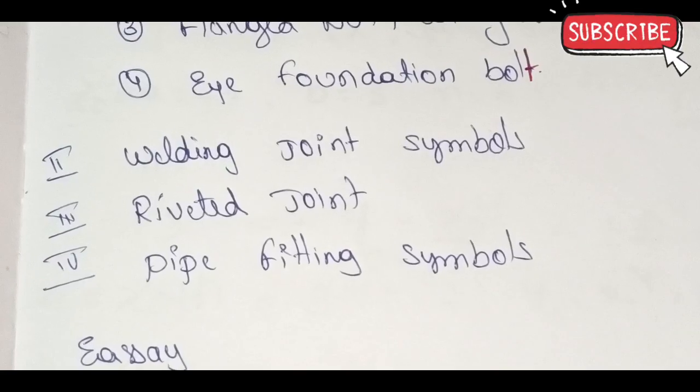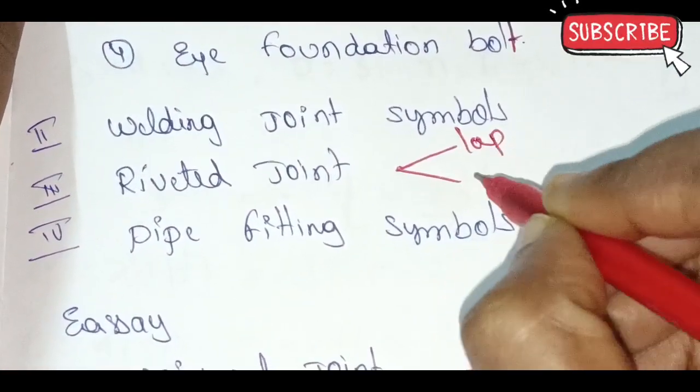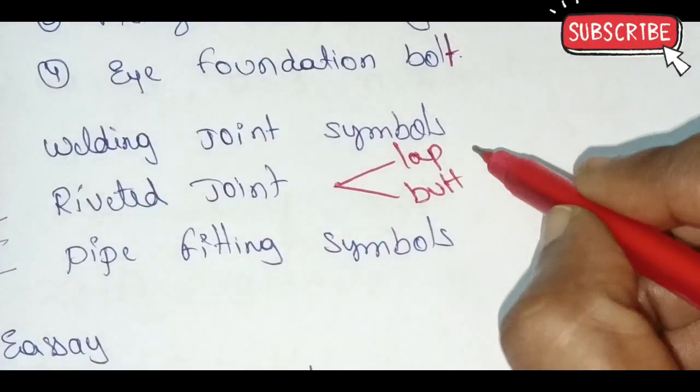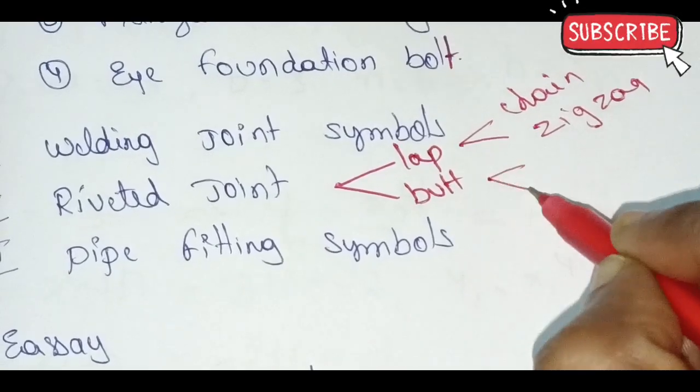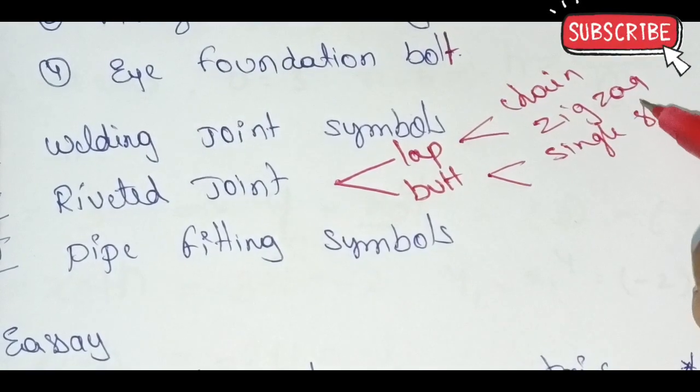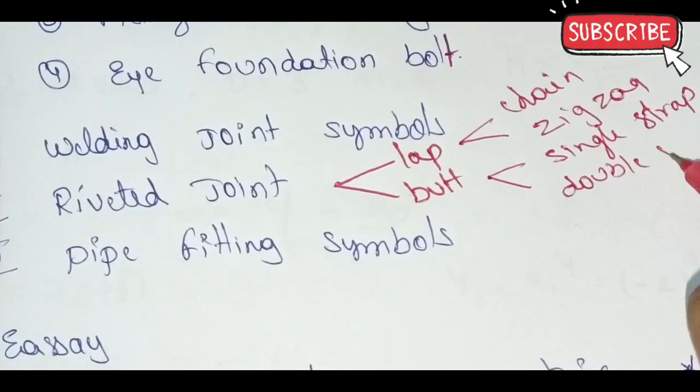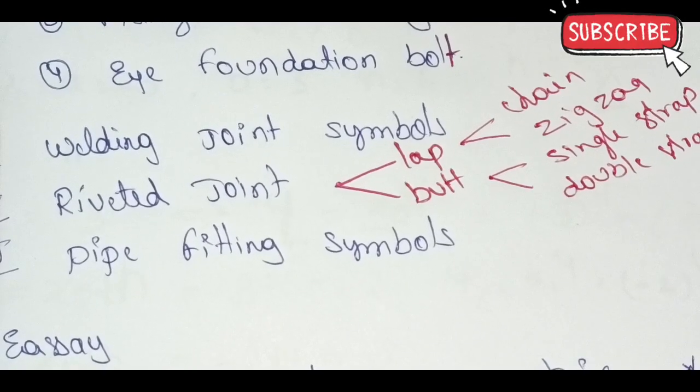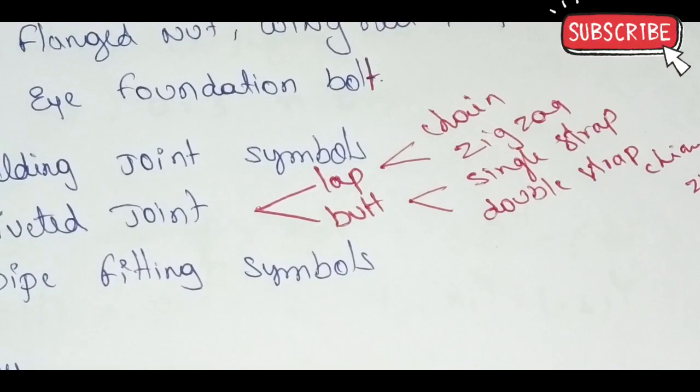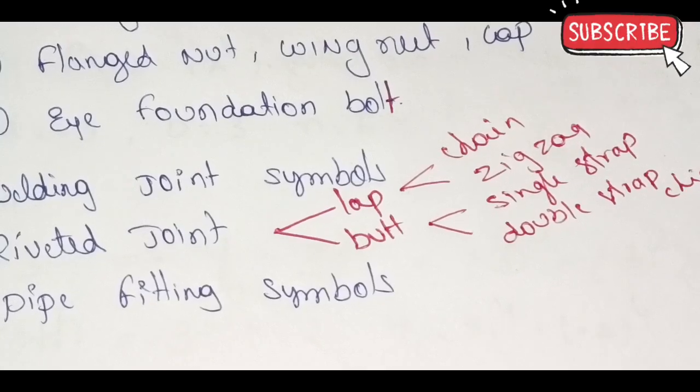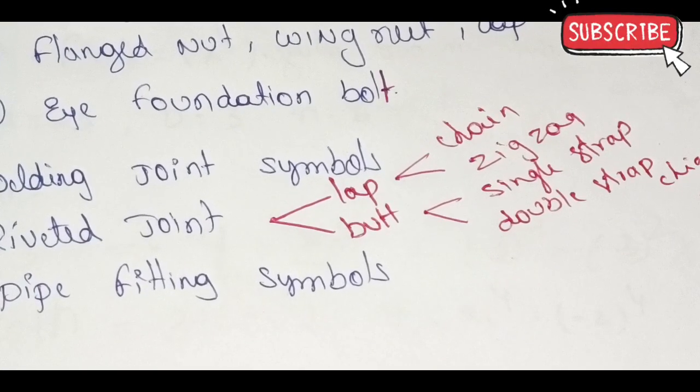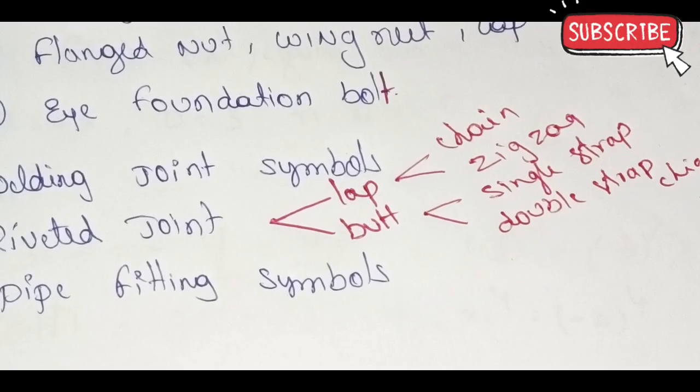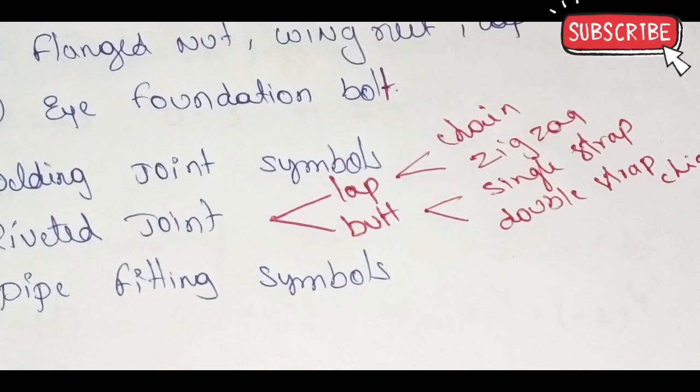Next is rivet joints: lap joint and butt joint. Chain type and zigzag. Single strap and double strap - we have zigzag and chain. The difference between lap joint and butt joint: chain is continuous and zigzag has a change in pattern. Single strap and double strap are the variations.